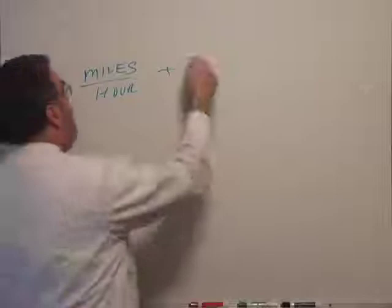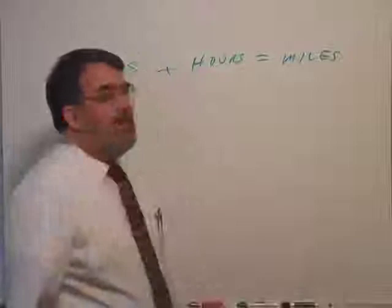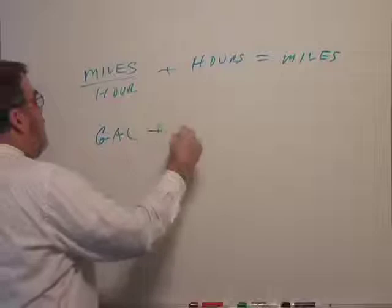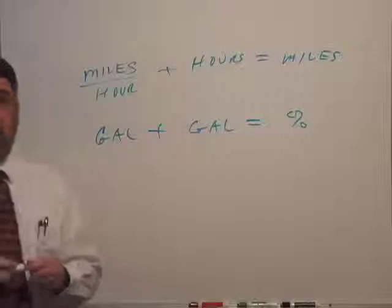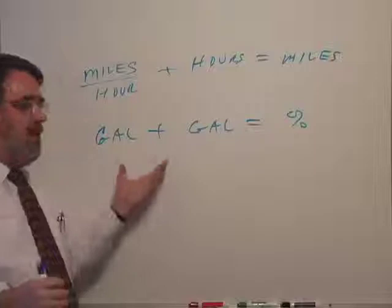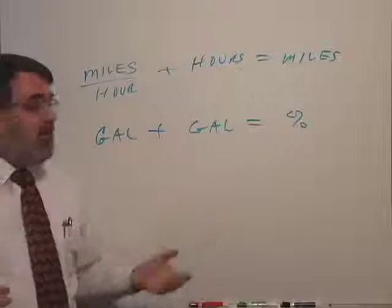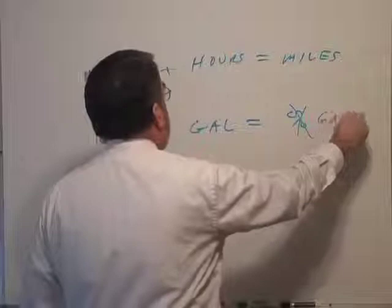Many times I've seen people take miles per hour and add hours and get miles. No good. I've seen people do this: gallons plus gallons equals percent. But what is a percent? I can see gallons, I can add gallons of water together, but I don't get a percent, I get gallons. So gallons plus gallons can only equal gallons.